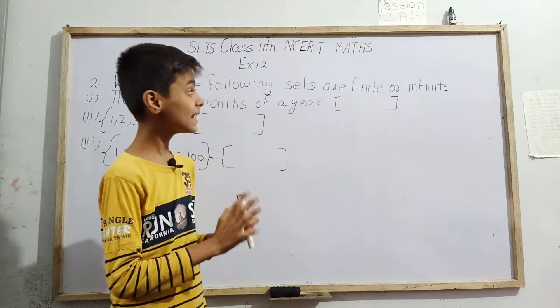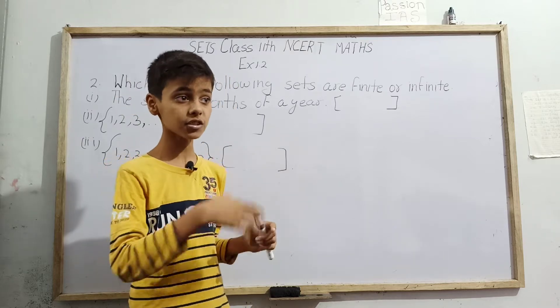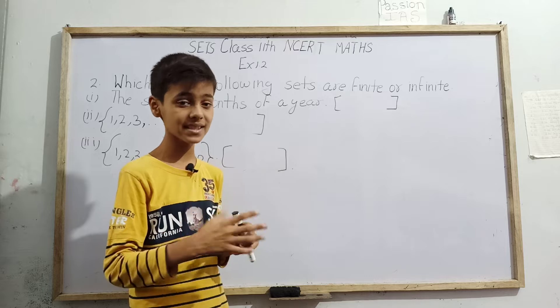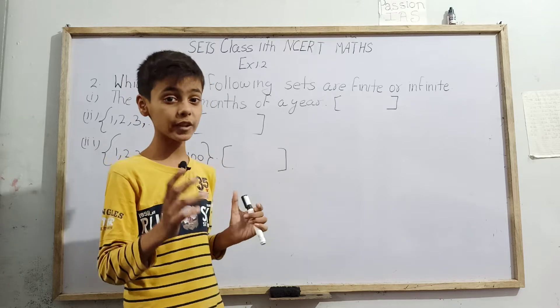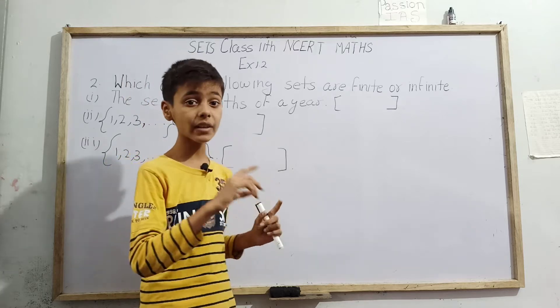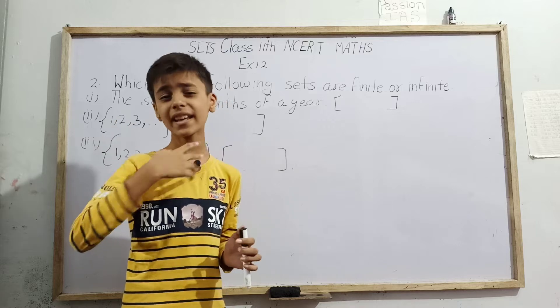First, let me define finite set and infinite set to you. The sets that can be easily counted, their number of elements can be easily counted, are called finite sets. But if the number of elements are infinity, they cannot be counted, they are unlimited, so those kinds of sets are infinite sets.